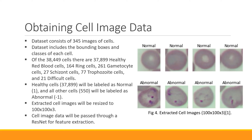There were 38,449 cells in total: 37,899 were healthy, 164 ring, 261 gametocyte, 27 schizont, 77 trophocyte, and 21 difficult. Because we're doing one class classification, we take all the healthy cells and label them positive one — considered normal. All other cells are given a label of negative one and are considered abnormal. The extracted cell image size we chose was 100 by 100 by 3 pixels for the color channels, which seemed to perform the best based on preliminary testing.